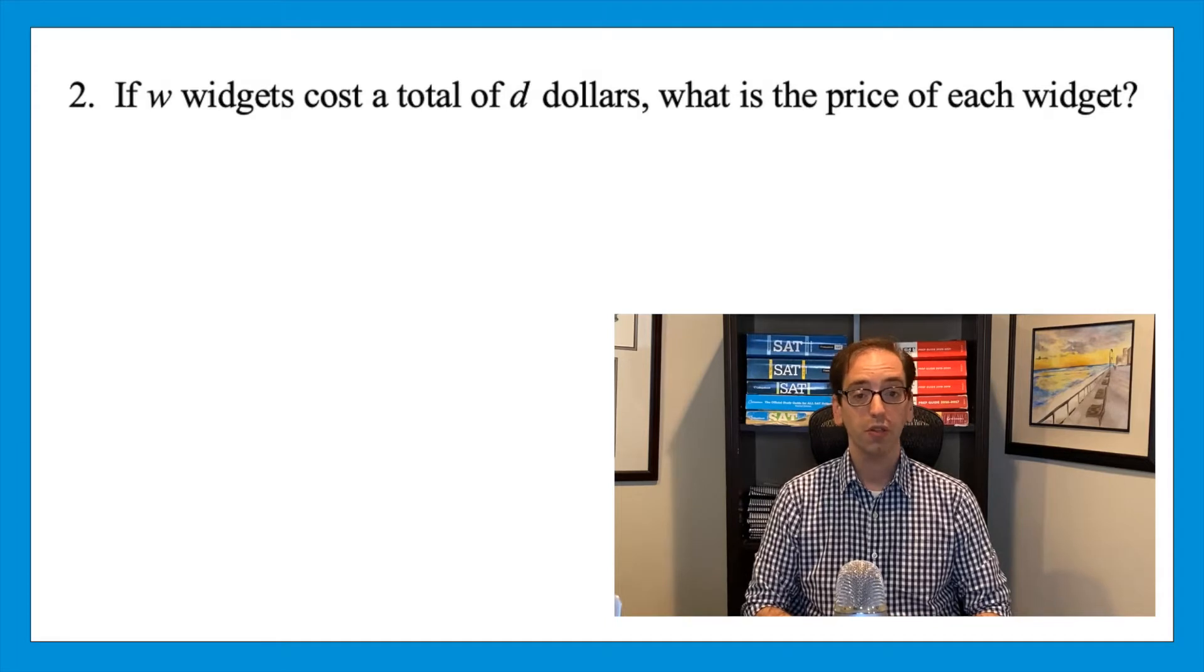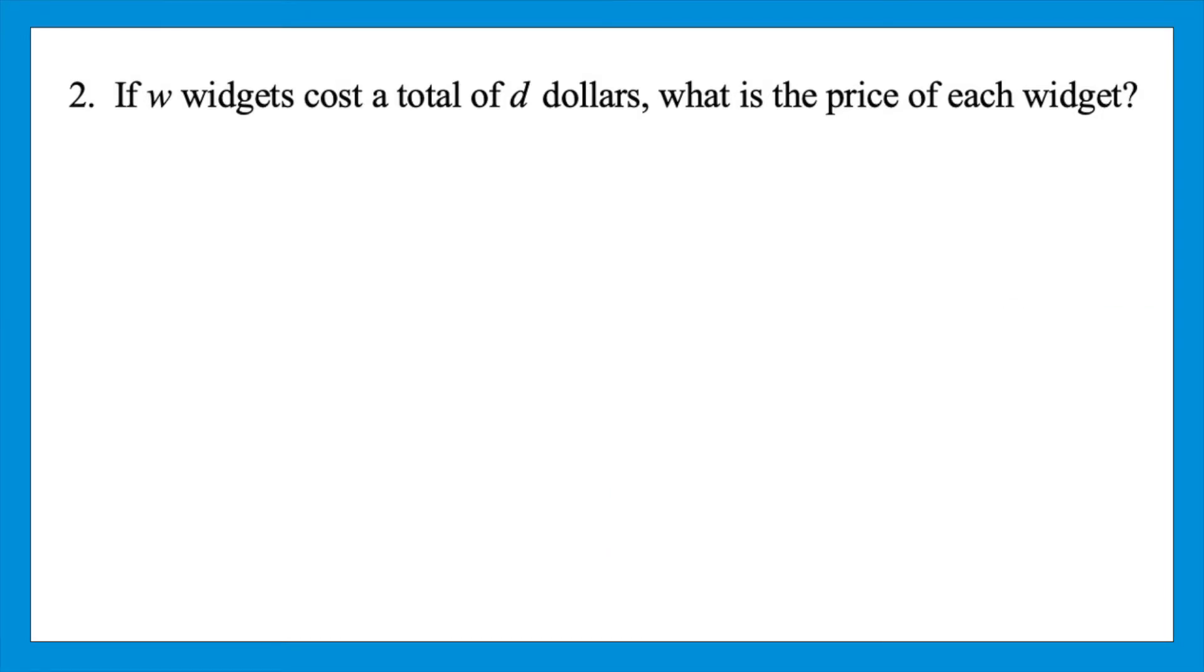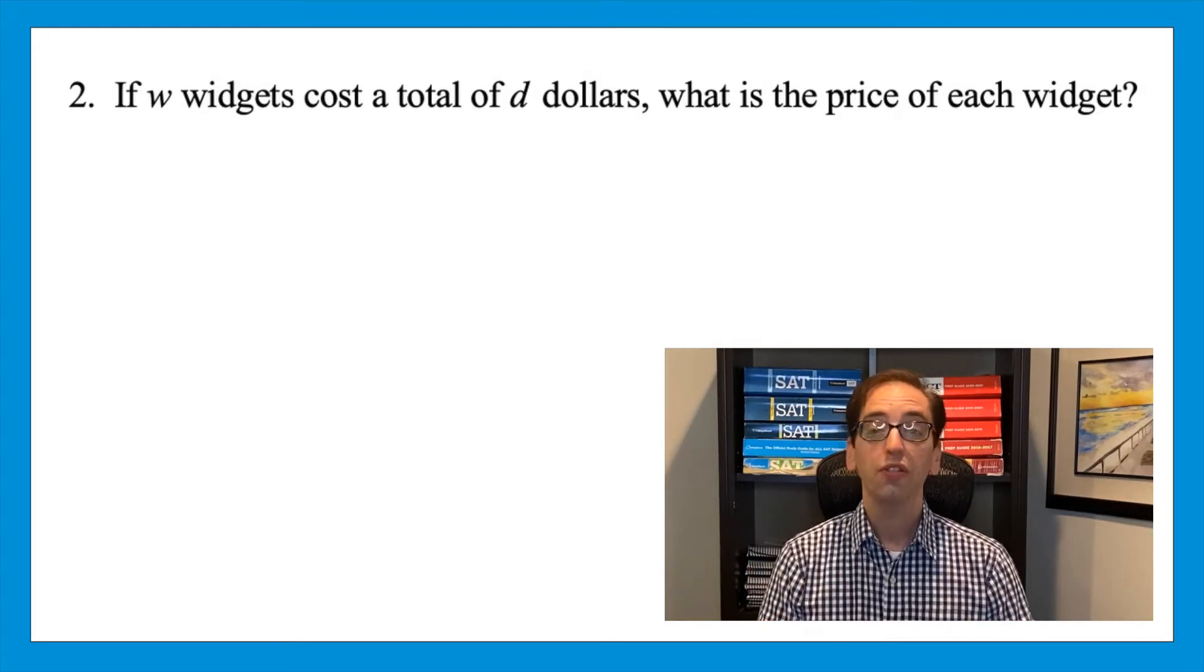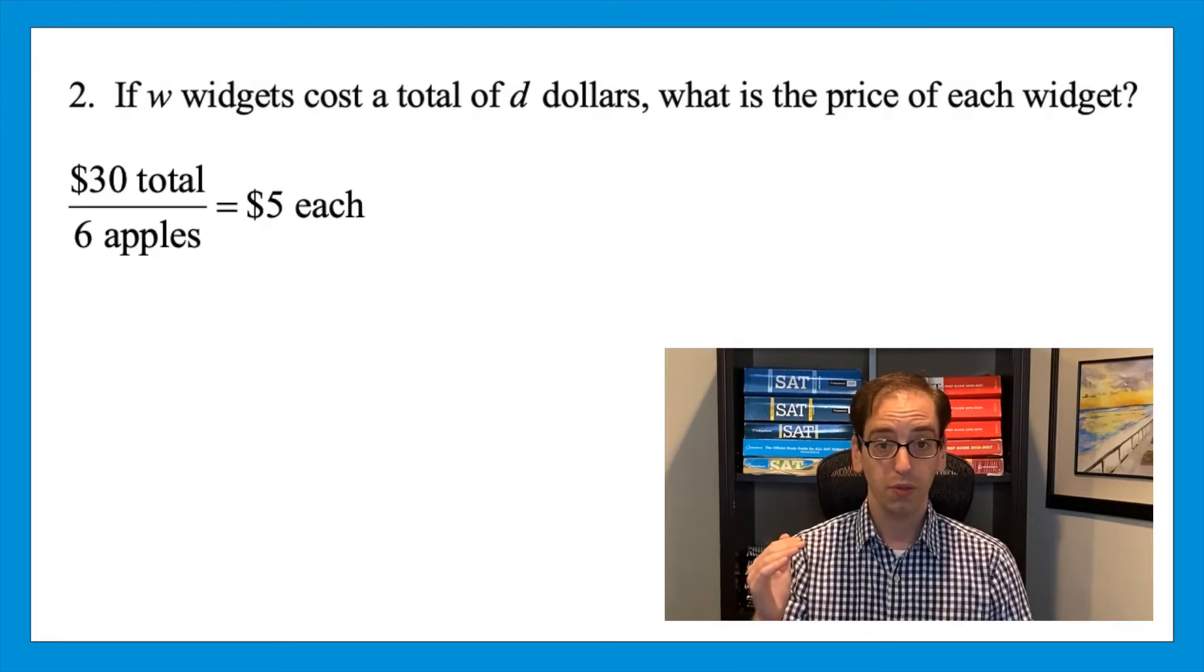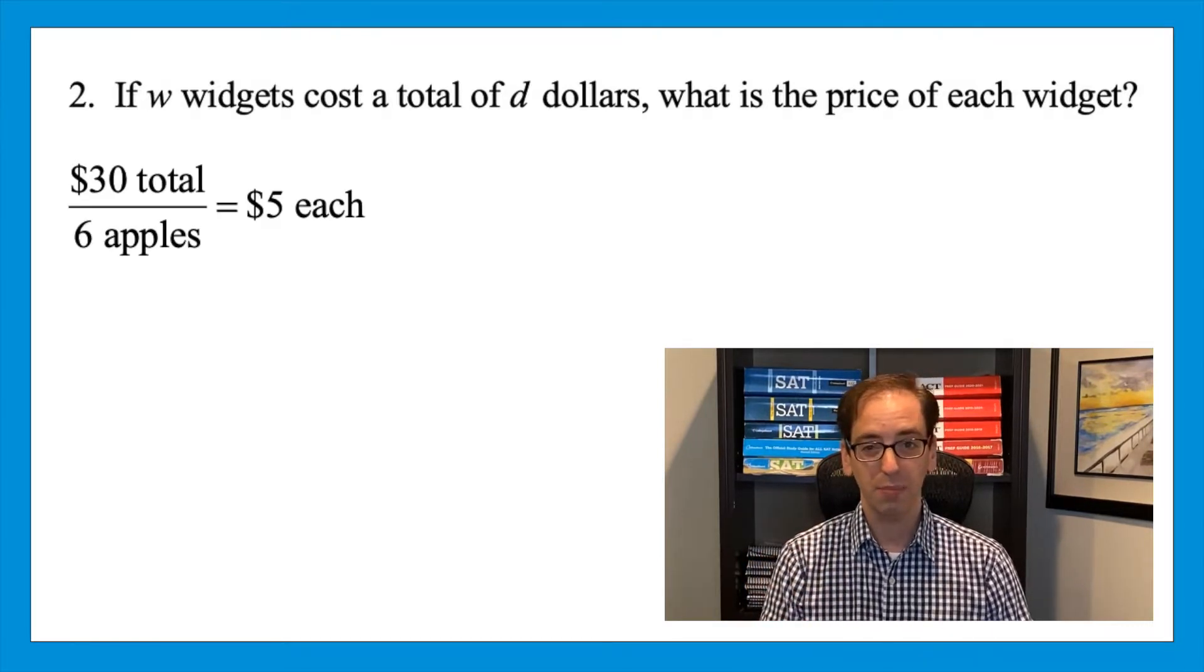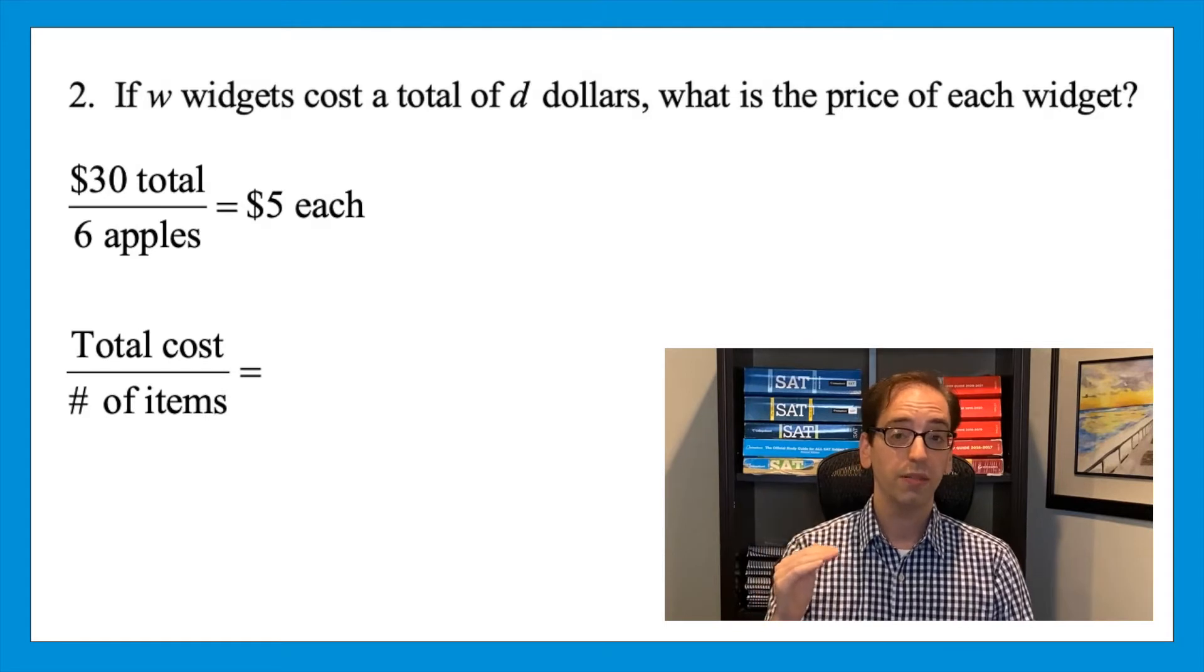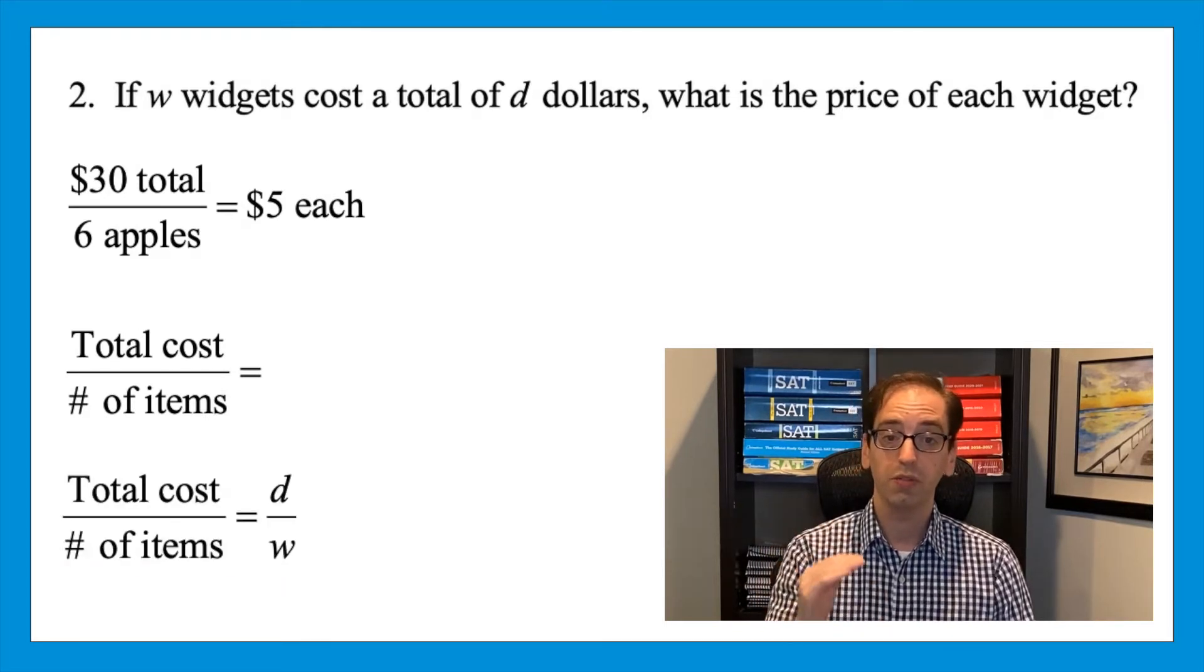Let's make it a little harder. If w widgets cost a total of d dollars, what is the price of each widget? Think about it for a moment and press pause. Again, let's think of numbers to make the concept a little less abstract. Let's say that we have six apples and spent a total of thirty dollars. So that means each one would have been five dollars. Thirty, the total, divided by how many? They could be expensive apples. It doesn't matter for purposes of math. So let's do the same thing now with the widgets. We have the total cost divided by the number of items. That means each one would cost d over w. The answer is d over w. This is a great way to approach questions that deal with variables. The questions don't want a numeric answer. They want an algebraic answer. So if you need help translating a situation with variables, pick numbers.